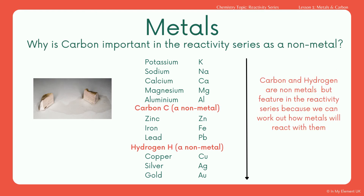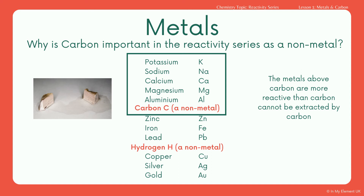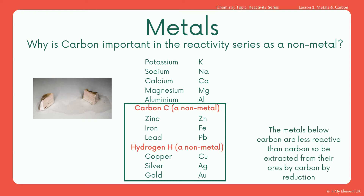One of the questions you need to be able to answer is: why is carbon important in the reactivity series even though it is a non-metal? The metals above carbon are more reactive than carbon, which means they can't be extracted by carbon. However, the metals below carbon are less reactive than it, and so can be extracted from their ores by carbon. Silver and gold don't really apply here because they can occur naturally and are not always part of an ore you need to extract them from.